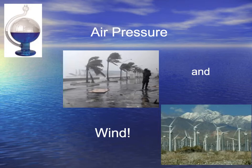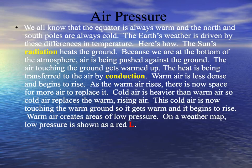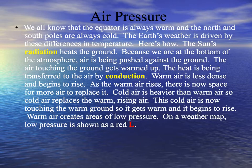Air pressure and wind — that's what the weather is really all about. We've got to start with air pressure. We all know that the equator is always warm and the north and south poles are always cold. The Earth's weather is driven by these differences in temperature.